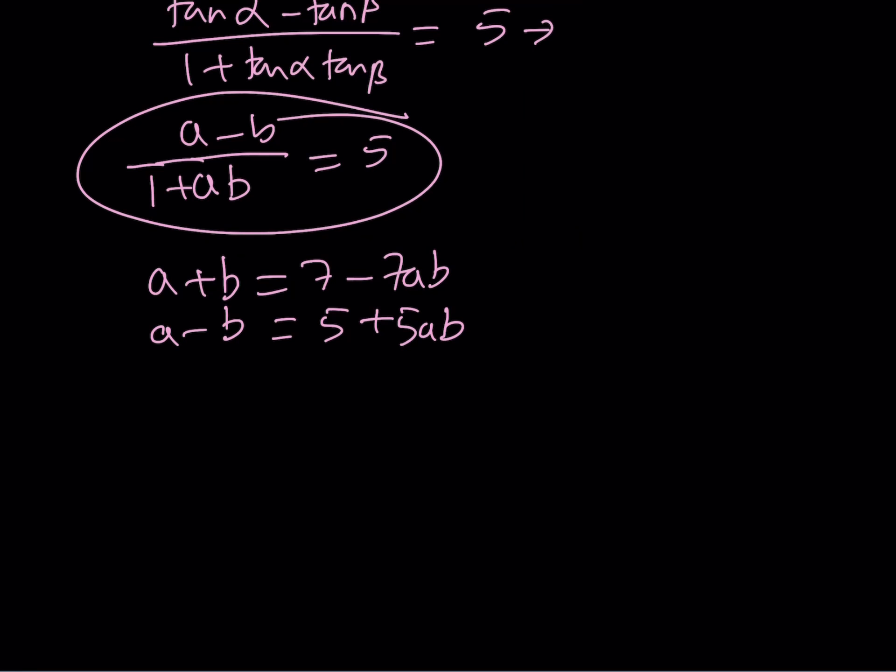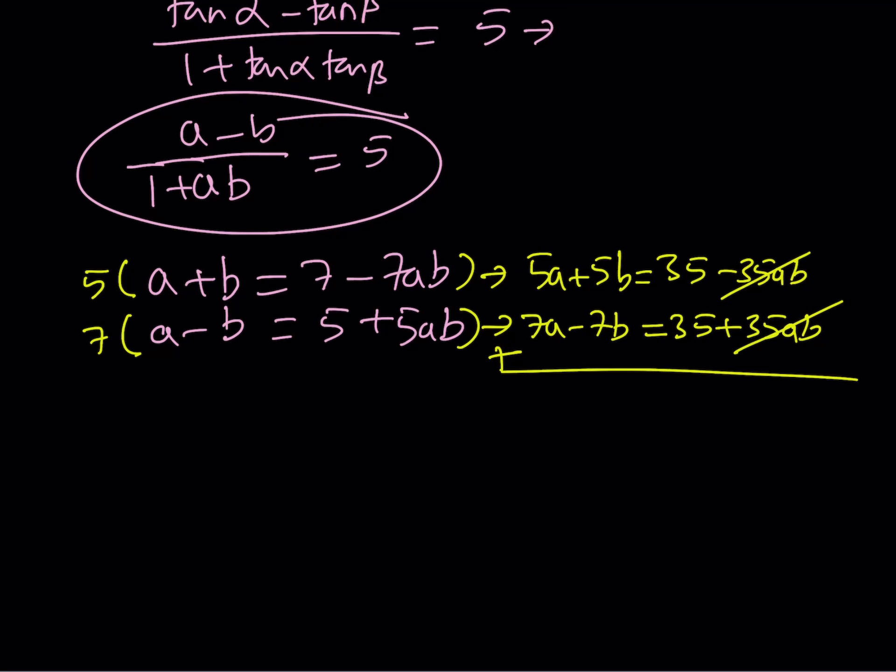Let's eliminate the ab term. Multiply this by 5 and multiply the bottom one by 7, so we're talking about the LCMs here. That's going to give us 5a plus 5b equals 35 minus 35ab. By the way, let me share a quick anecdote. When I was doing these in high school for the first time, I always forgot to multiply the right-hand side.